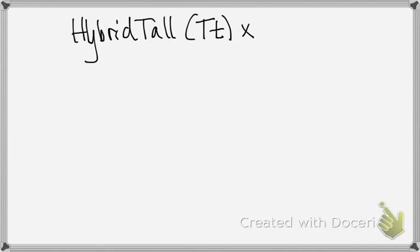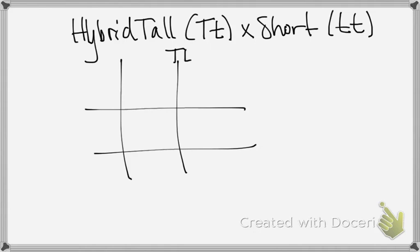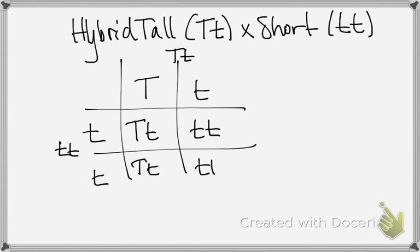Okay, so that was our first example. Another example I'll give you would be if I had a hybrid tall crossed with a short pea plant. So, we set up our Punnett square. Here's our first parent. Here's our second parent. You separate out the gametes that the parent can produce and then you put them back together here representing the offspring that could be created.